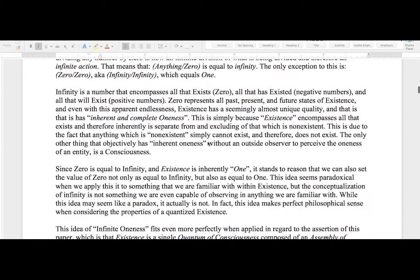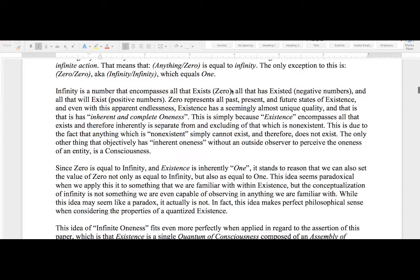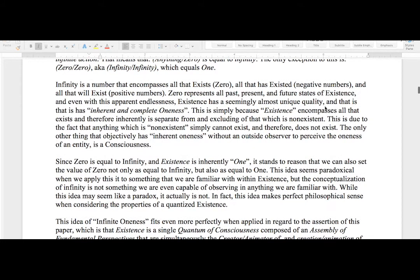Infinity is a number that encompasses all that exists (zero), all that has existed (negative numbers), and all that will exist (positive numbers). Zero represents all past, present, and future states of existence. And even with this apparent endlessness, existence has a seemingly almost unique quality, and that is that it has inherent and complete oneness. This is simply because existence encompasses all that exists and therefore inherently is separate from and excluding of that which is non-existent. This is due to the fact that anything which is non-existent simply cannot exist, and therefore it does not exist. The only other thing that objectively exists has inherent oneness.